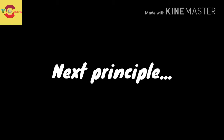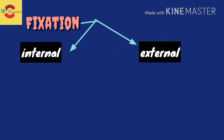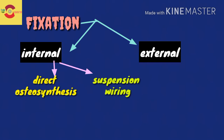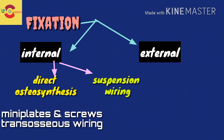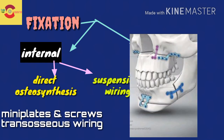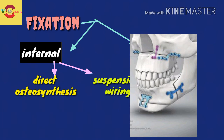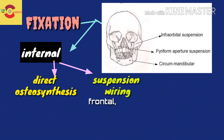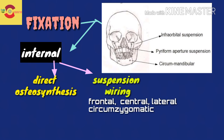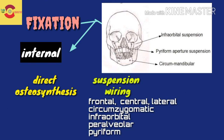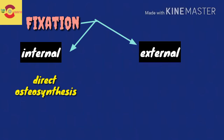Moving on to the next principle — fixation of fractures. Methods of maxilla fracture fixation include internal fixation and external fixation, with external fixation being a less frequently used method. For internal fixation, we have two main methods: direct osteosynthesis and suspension wires. Direct osteosynthesis is the preferred method, which includes mini plates and screws and transosseous wiring. Suspension wires are an ancillary method and include frontally, centrally, or laterally placed wires, circumzygomatic wires, infraorbital wires, and piriform aperture or peralveolar wires.